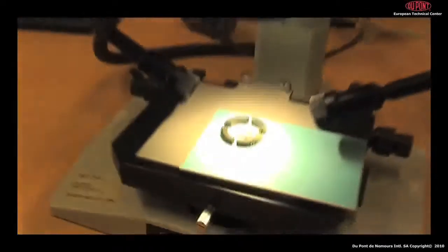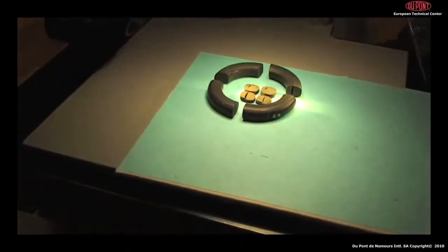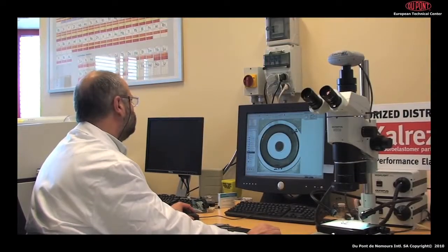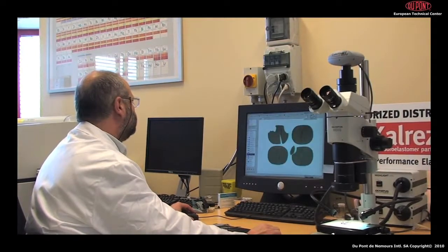O-rings are cut in four segments and are examined under a microscope for cracks. This allows for ratings between 0 and 5 depending on the numbers and types of cracks.